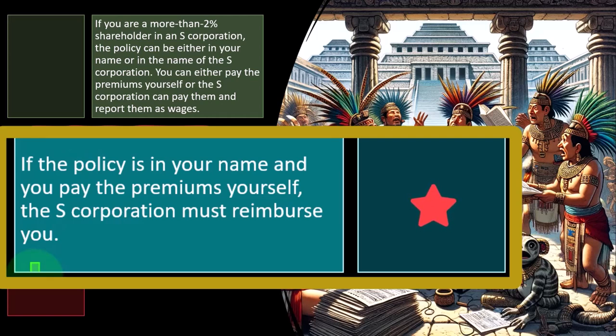With an S corporation, instead of self-employment tax flowing through to you, you have to pay Social Security and Medicare by treating yourself as an employee of the S corporation. That means you'll have a W-2 issued to yourself — which is different from a Schedule C, where you don't pay yourself a W-2, or a partnership, where you might not pay yourself a W-2 either.